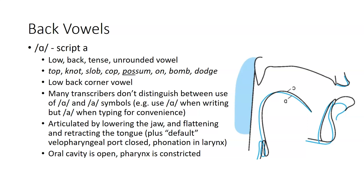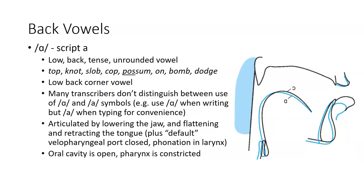If you look at the image on the right, which has an x-ray tracing contrast of A versus AW in a speaker, the primary difference is very small in tongue position, but there's quite a bit of difference in the lip position for the rounding for AW versus AH. In this articulatory configuration for AH, the oral cavity is relatively open, but the pharynx is constricted.